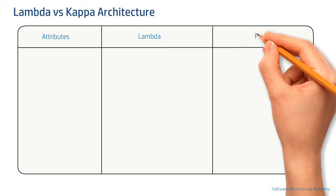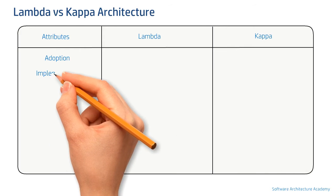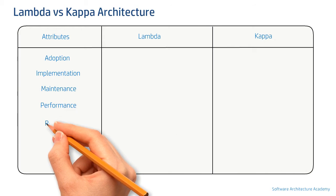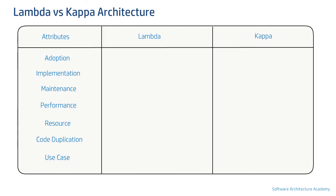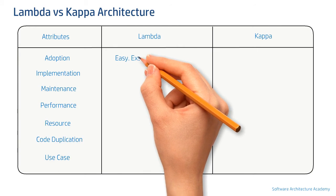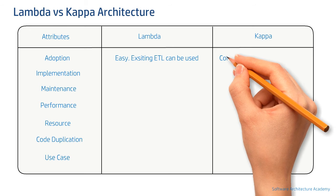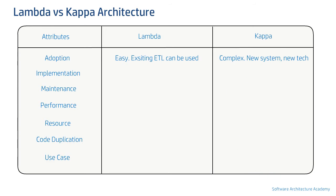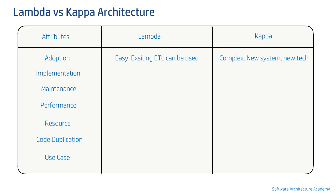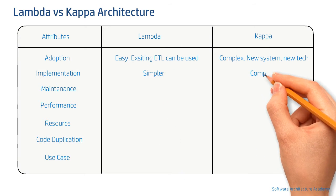Finally, we will discuss key differences between both patterns. When it comes to adoption from a traditional or legacy system, Lambda architecture is easy to adopt as most of the ETL modules can be reused or used as-is for the batch processing side. On the other hand, a Kappa architecture would require a system to be built ground up, most likely using a new tech stack altogether. That's what also makes Lambda architecture easier to implement than Kappa.